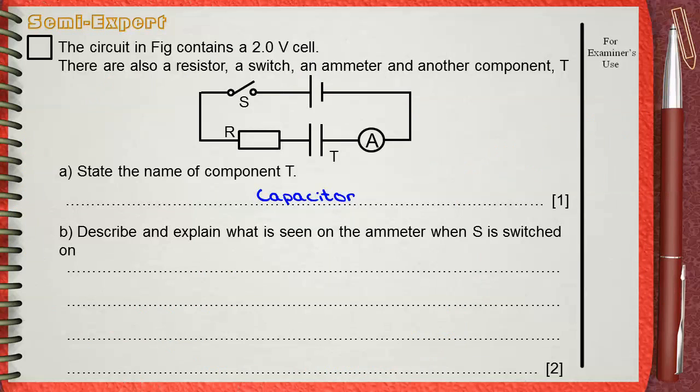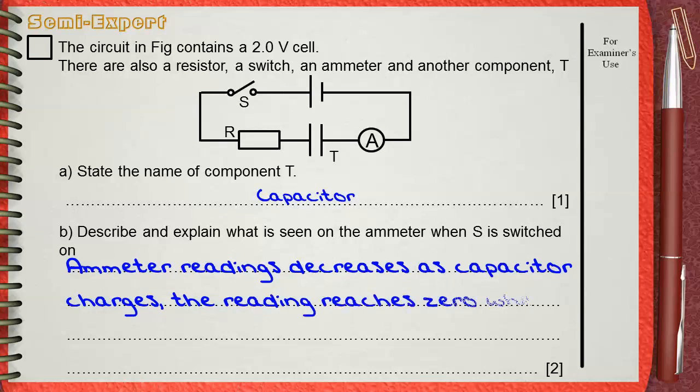This is exactly what happens in our circuit. So we say that ammeter reading decreases as capacitor charges. The reading reaches zero when the capacitor is fully charged.